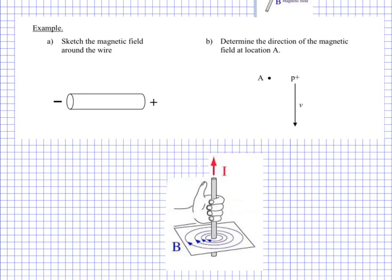Hello everyone, here's another Physics 30 example set. This one is from Unit 3 Electromagnetism, and this is Lesson 4. This is the hand rules, hand rules number 1 and number 2.